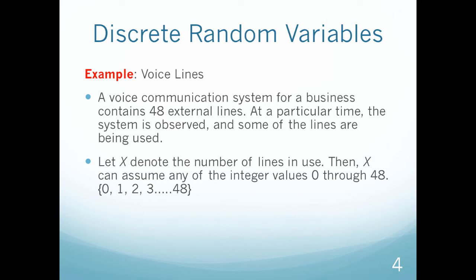If I let x denote the number of lines that are in use, then x can assume any integer value 0 through 48. We know this is a discrete random variable because I can't really have two and a half lines being used at once. So it's going to be integers ranging from 0 lines in use, so no phone calls are coming in, to 48 external lines. It can range all the way from 0 to 48.